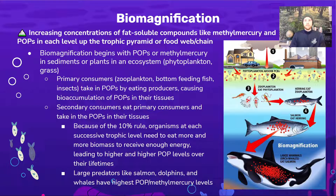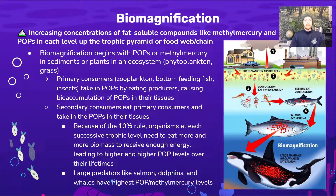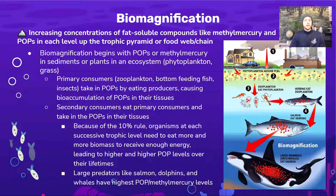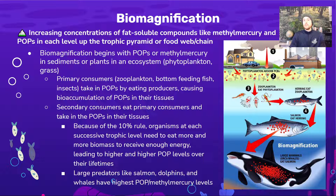This is a tricky point to understand. When we get to secondary consumers, they have to eat the primary consumers and take in their biomass. Because of the 10% rule, organisms at the secondary consumer level must consume far more biomass to get the equivalent energy. As they consume more biomass, they take in higher amounts of persistent organic pollutants or methylmercury, accumulating it over time. By the tertiary consumer level, they must consume even more biomass, accumulating these POPs or methylmercury at even higher levels.